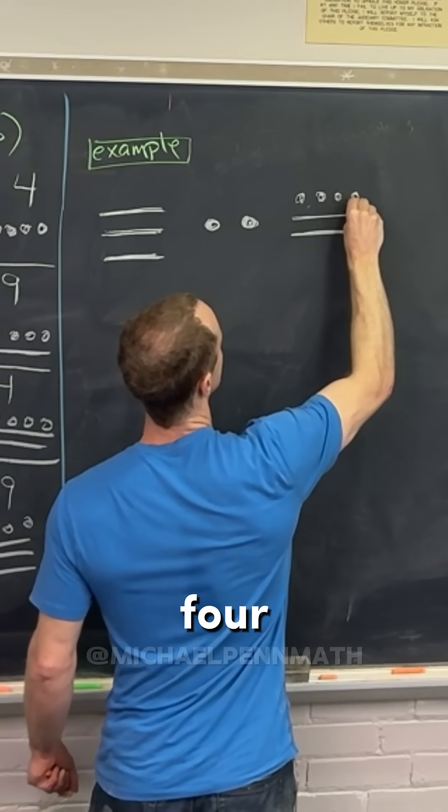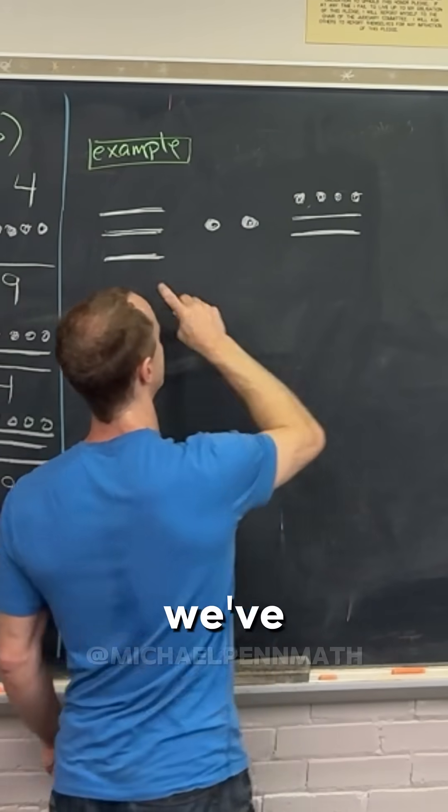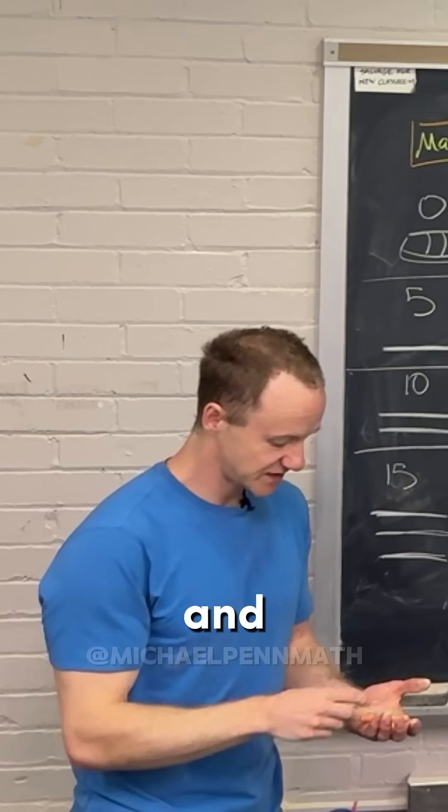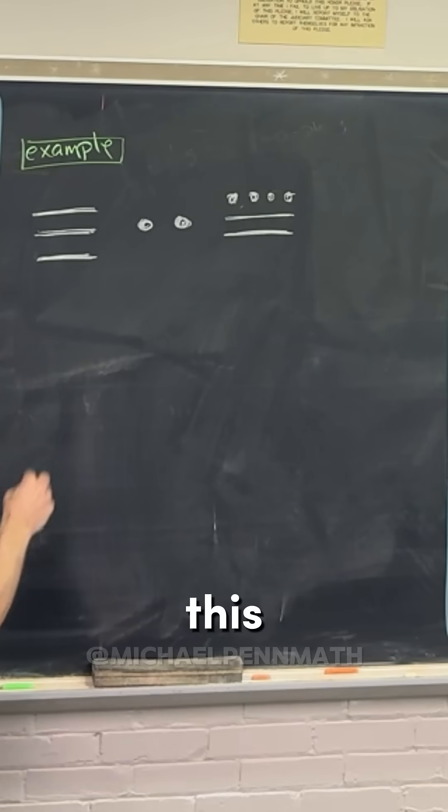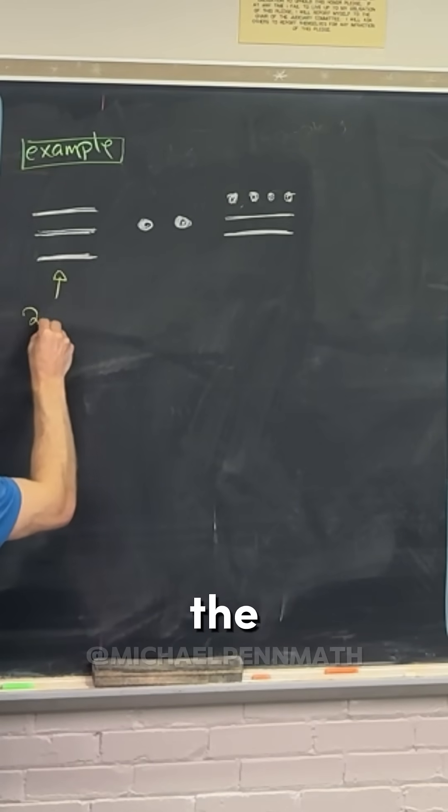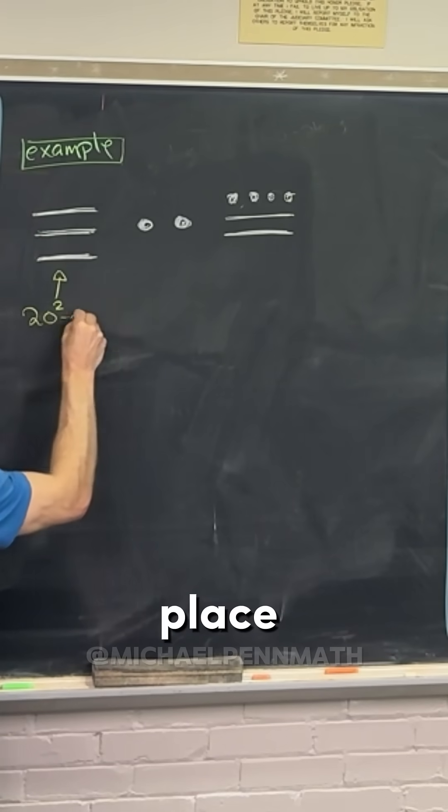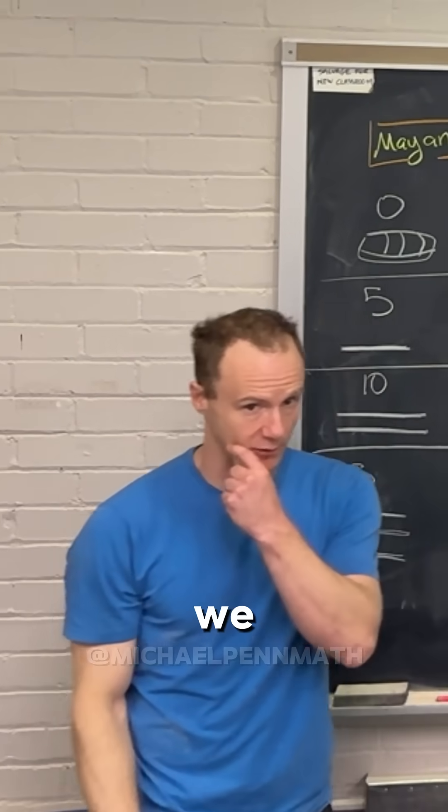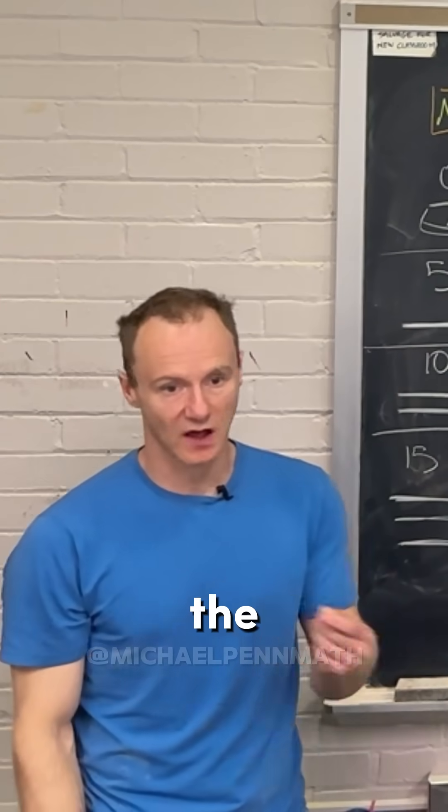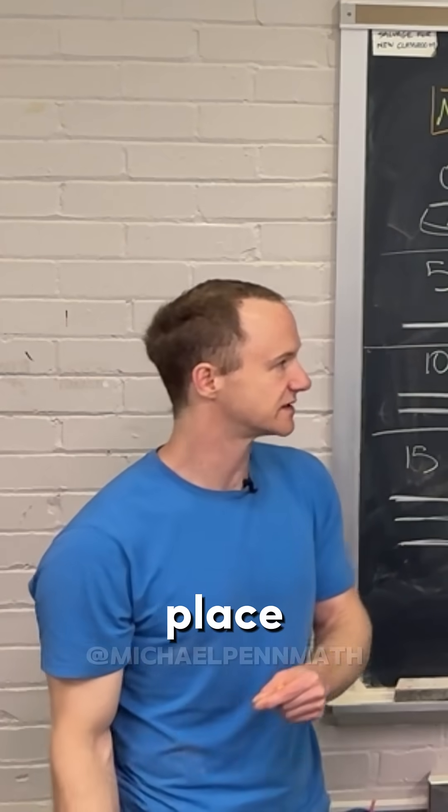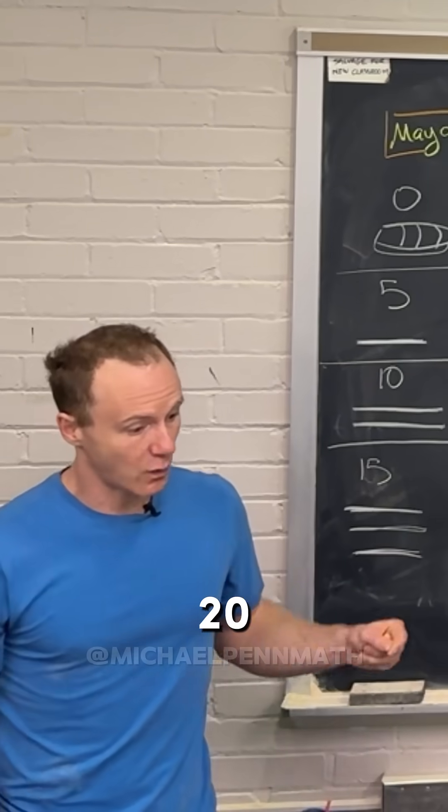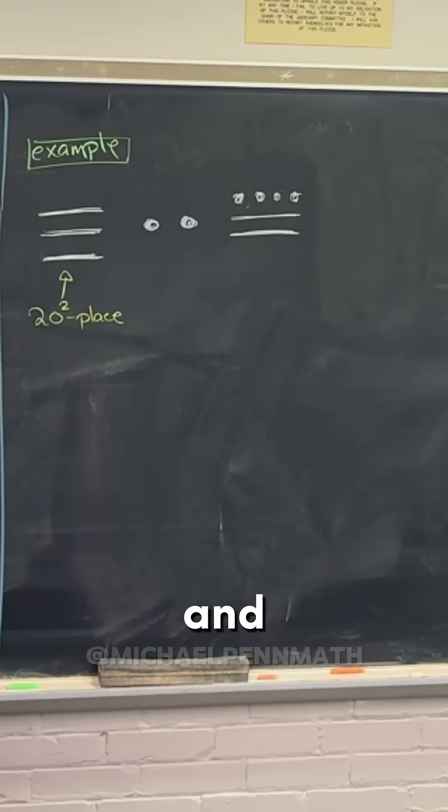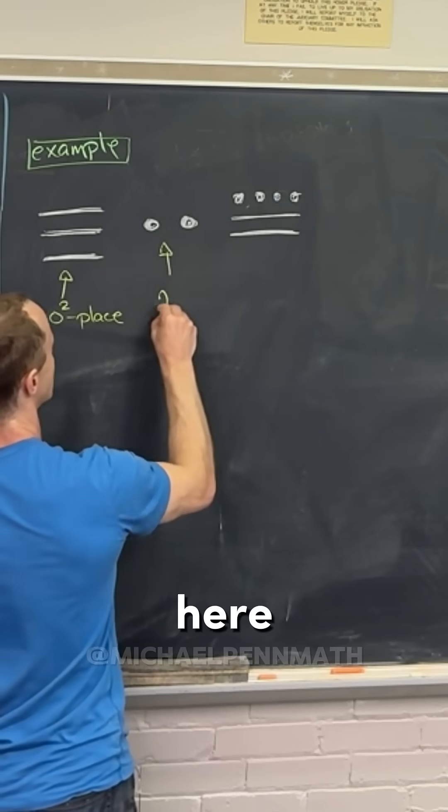So that's the number - we've got three digits. To lay it out, this digit right here is the 20 squared place. It would be the hundreds place if we were thinking about the way we write numbers, but the hundreds is like the 10 squared place. Since we're in base 20, it's the 20 squared place.